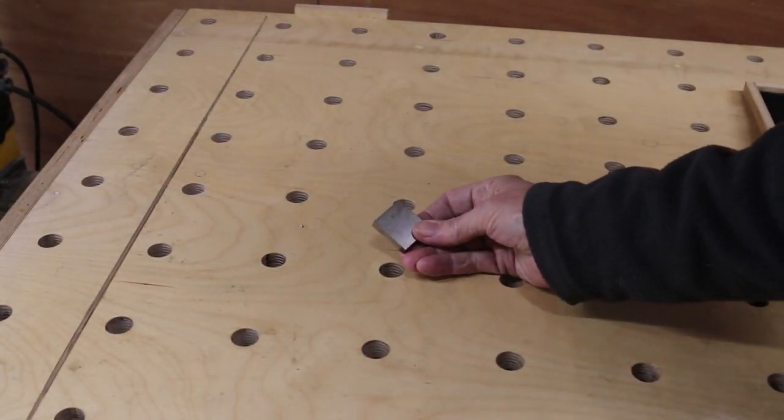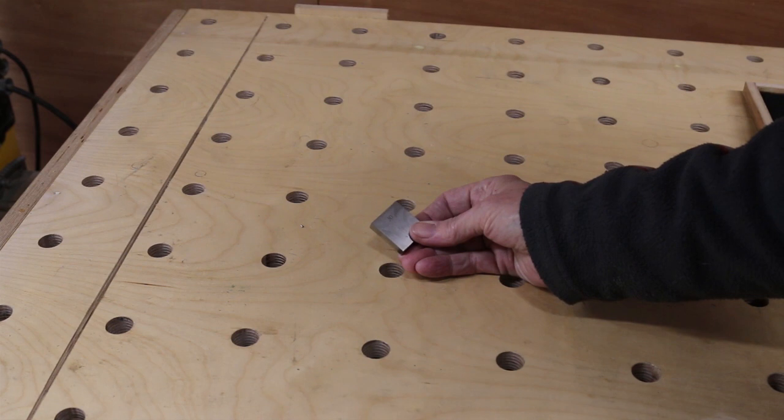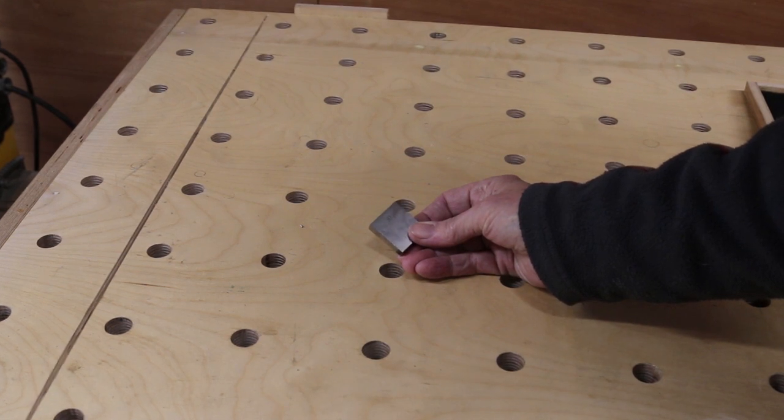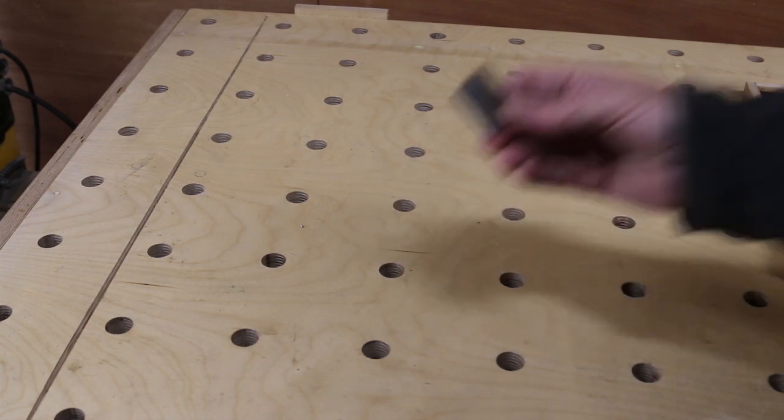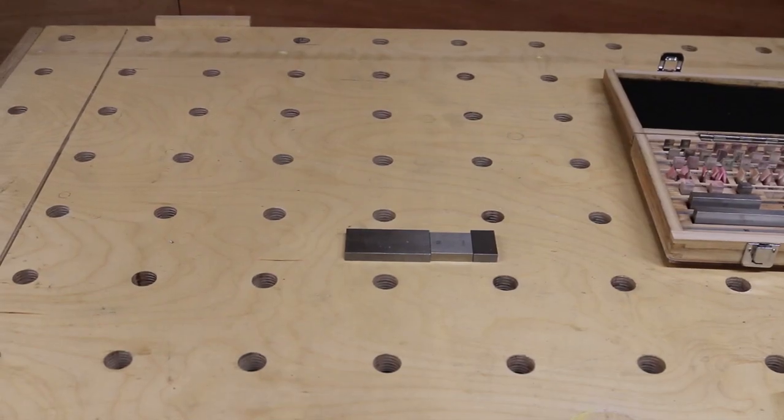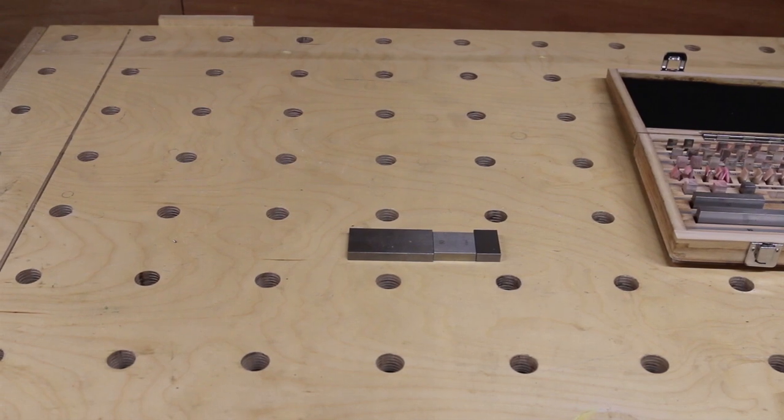Each of these comes with its own error report. This one for example is 20 nanometers over size. That's 20 millionths of a millimeter. For perspective that's half the diameter of a coronavirus. Used in combination I can measure distances to within five microns.